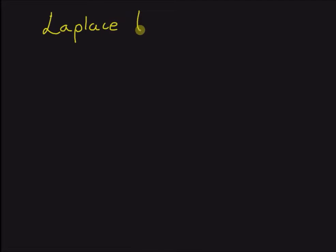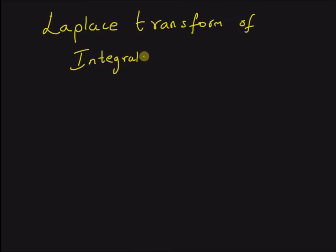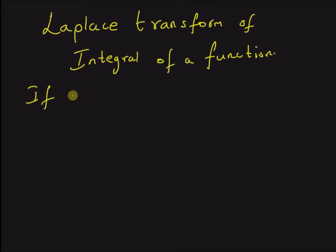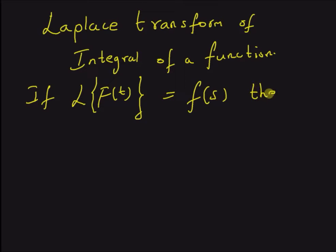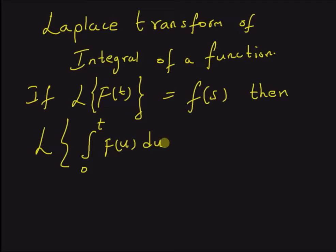Laplace transform of integral of a function. So, if Laplace transform of a function f of t is equal to F of s, then Laplace transform of an integral of this function, that is integral 0 to t of f of u du, is equal to F of s over s — that is the Laplace transform of the original function divided by s.